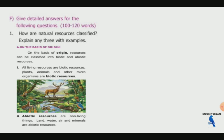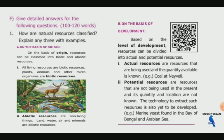Abiotic resources are non-living things. Land, water, air, and minerals are abiotic things — they are non-living things. All of these are abiotic things.